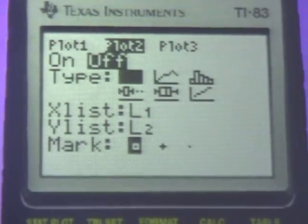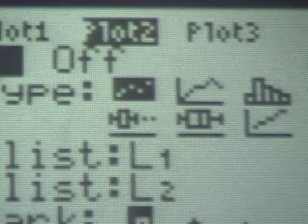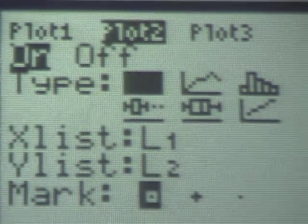So I'm going to shut the first plot off, and I'm going to turn a new plot on, plot two. And I'm going to make a scatter plot. Let me turn it on first, on. I'm going to make a scatter plot. Which scatter plot's on?